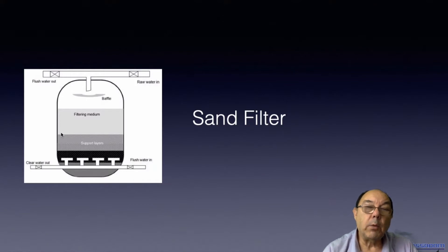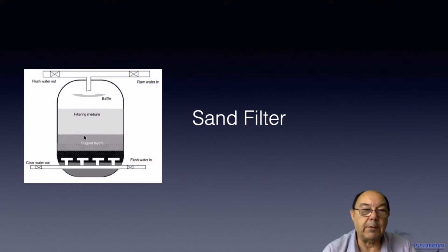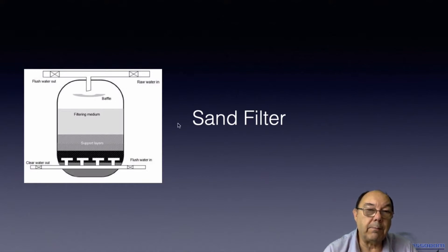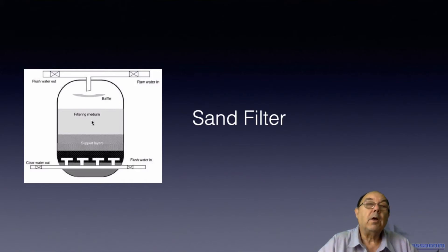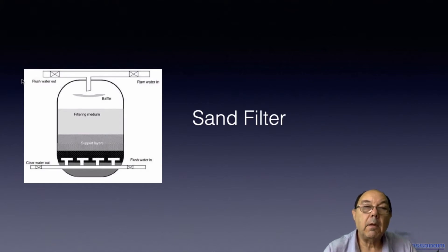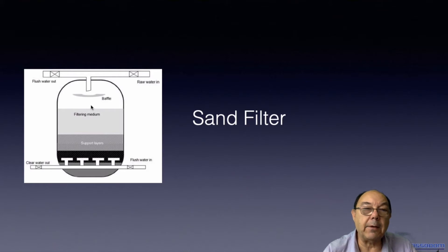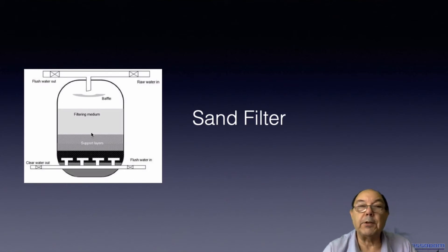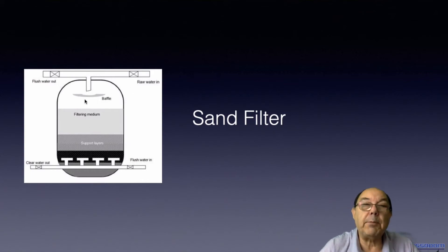At that point the mill will move on to another sand filter — they typically have at least three — and this one will then be back-washed. We close that valve, close this valve, flush water in and up, which churns up all the sand and takes out all the little bits that have been trapped, washing them away. Once the water starts coming through clear we stop the washing process, give time for the sand to settle back again, and by the time that happens the last sand filter in use will just be starting to get blocked — so they'll switch over to this one and carry out the cleaning procedure on the last one.